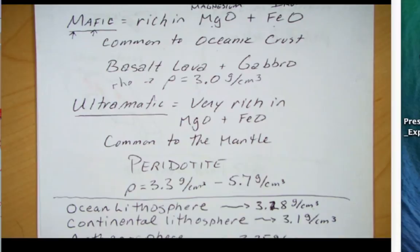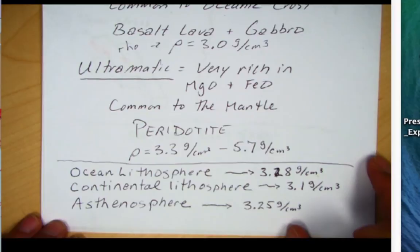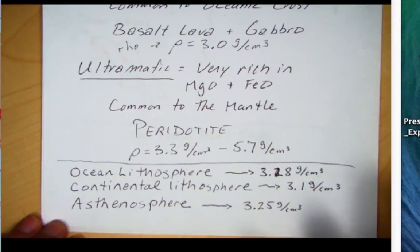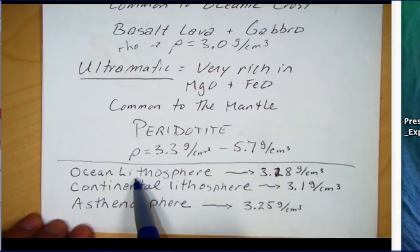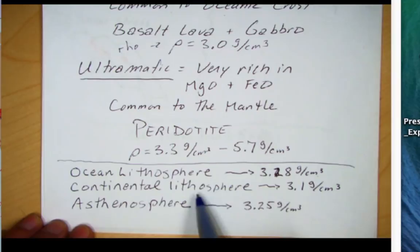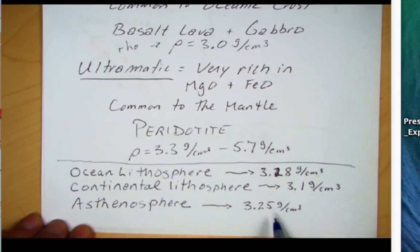Looking at some densities: one of the tutorial animations on plate tectonics will ask you about the densities of the lithosphere and asthenosphere. Note that oceanic lithosphere, or oceanic tectonic plates, are 3.28 grams per centimeter cubed. Continental lithosphere is 3.1 grams per centimeter cubed. And the asthenosphere is 3.25 grams per centimeter cubed.